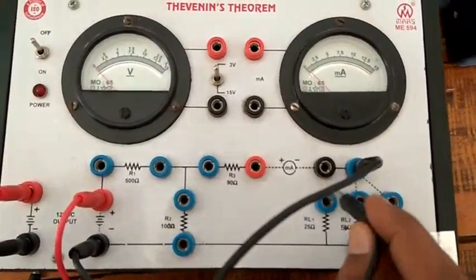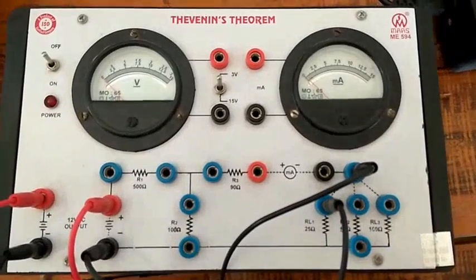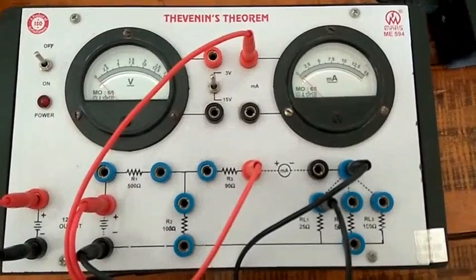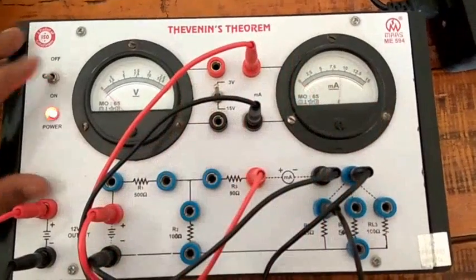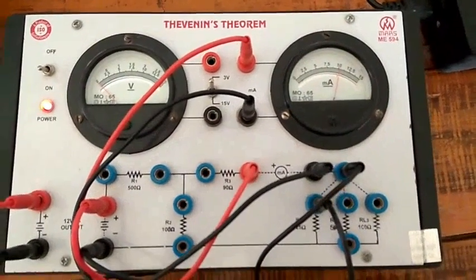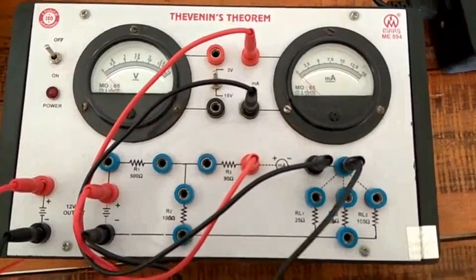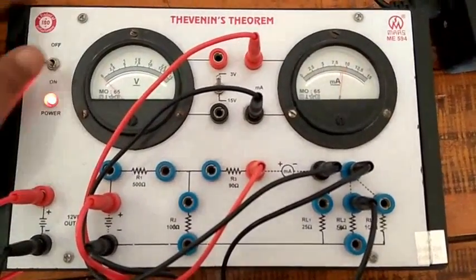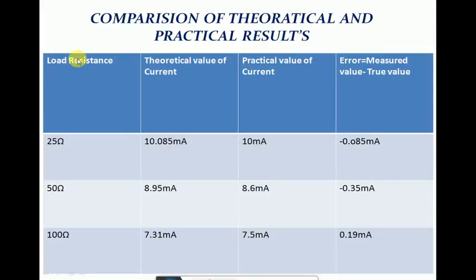To measure the current, the positive terminal of the ammeter is connected to the positive lead and the negative terminal to the negative lead. Turn on the supply, and the current is found to be 10 mA. Now changing the load from RL1 to RL2 = 50 Ω, the measured current is 8.6 mA. Changing the load to RL3 = 100 Ω, the measured current is 7.5 mA. Here is the comparison of the theoretical and practical results of Thevenin's theorem.